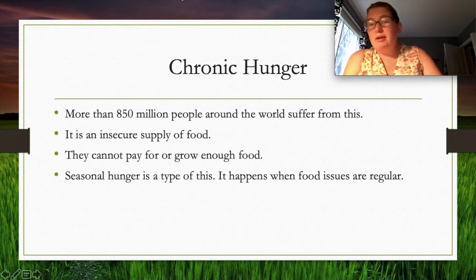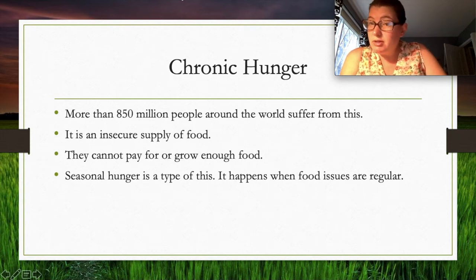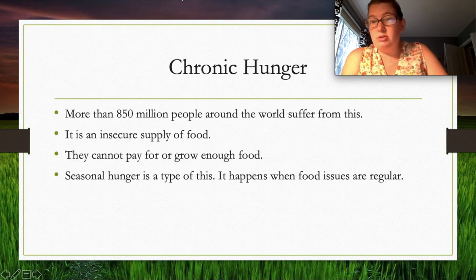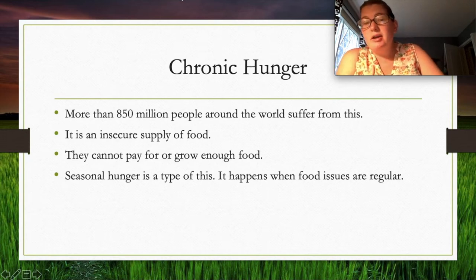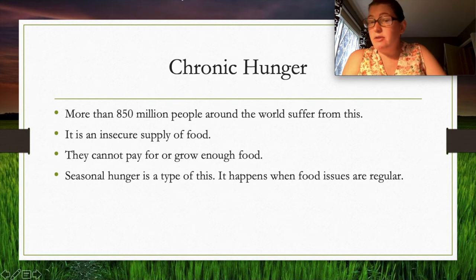Seasonal hunger is another form — for example, in Canada if you grow all your own food, the short growing season means six months of winter with no ability to grow food. Chronic hunger affects more people than starvation; starvation is extreme, while chronic hunger is less visible but widespread.